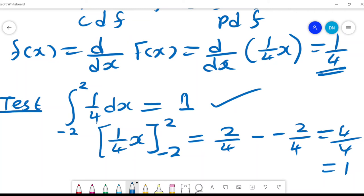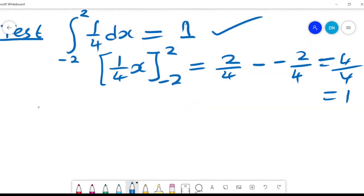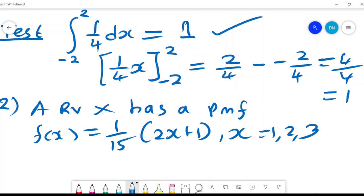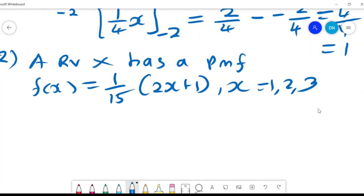Now, in situations where we are given the discrete case, the PMF, I want to look at an example. Variable X has a PMF, that is probability mass function, given by f(x) equals 1 over 15 times (2X plus 1).